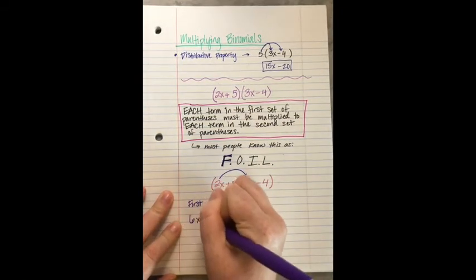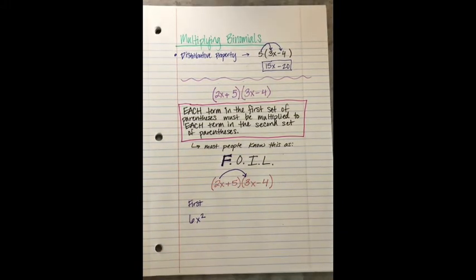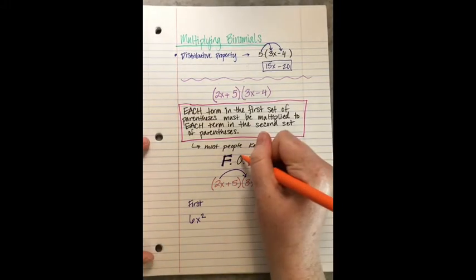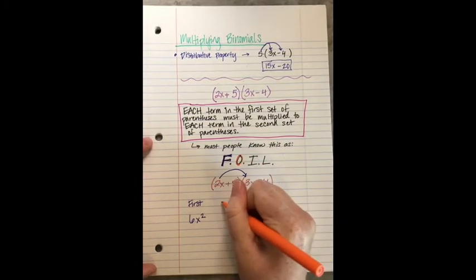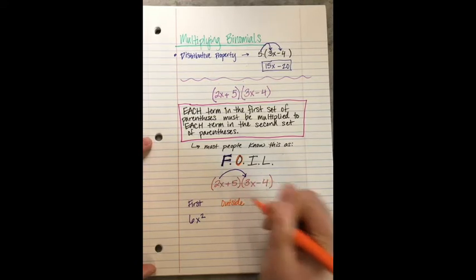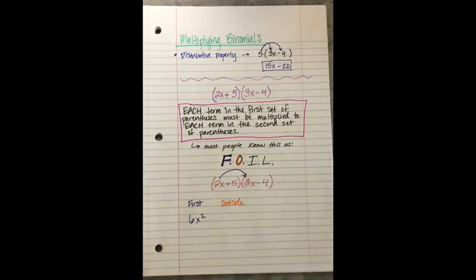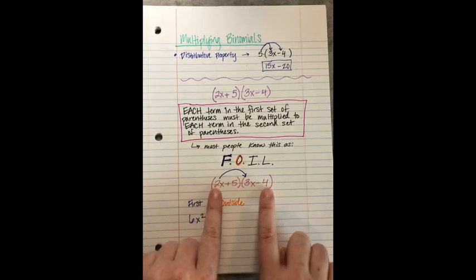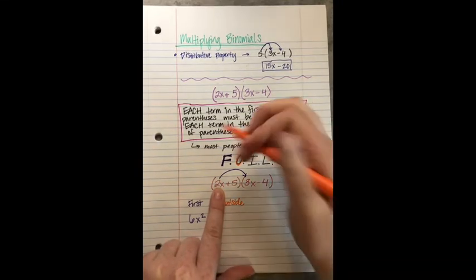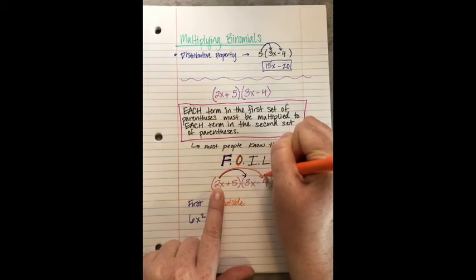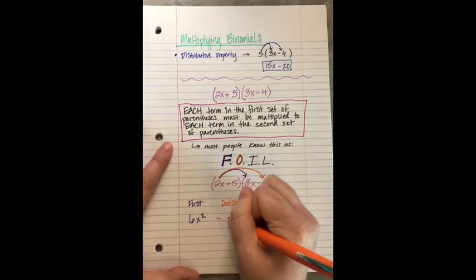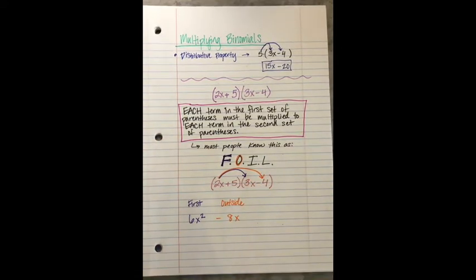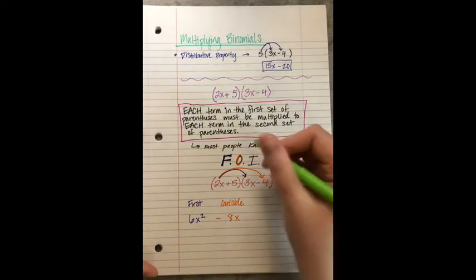Next is O, which stands for Outside. You multiply the terms that are on the outsides of the parentheses. Those would be 2x and negative 4. 2x times negative 4 is negative 8x.